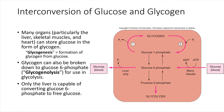Given how useful glucose molecules can be for cells in terms of providing energy, cells like to hold on to glucose. If they find some extra glucose, they like to store it for use later on. This is something that many different tissues throughout the body can do — they can take up glucose from the bloodstream and store it in the form of glycogen. That process of producing glycogen is called glycogenesis, which is the formation of glycogen from glucose molecules.